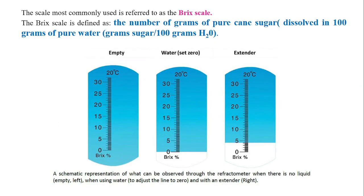The scale used in this experiment is called the Brix scale. The Brix scale is defined as the number of grams of pure cane sugar, that is sucrose, dissolved in 100 grams of pure water.